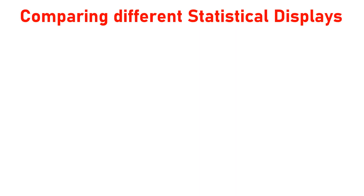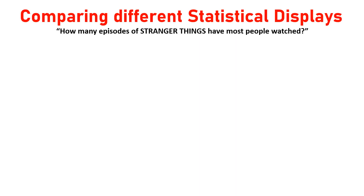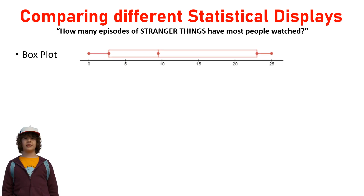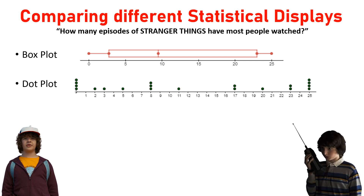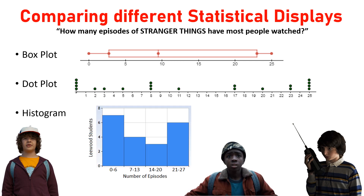So, comparing different statistical displays. I'm going to pose the question: how many episodes of Stranger Things have most people watched? I posed this to the characters on the show themselves. Dustin collected some data and used a box plot. Mike used a dot plot, and Lucas used a histogram. Let's analyze each one so we can see the pros and cons of each particular statistical display.